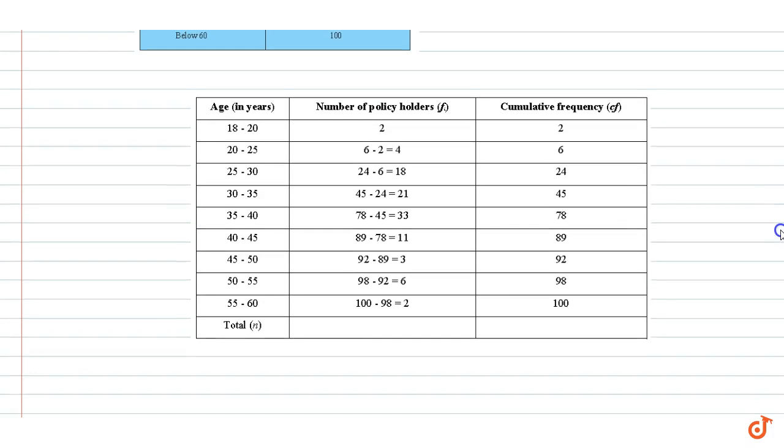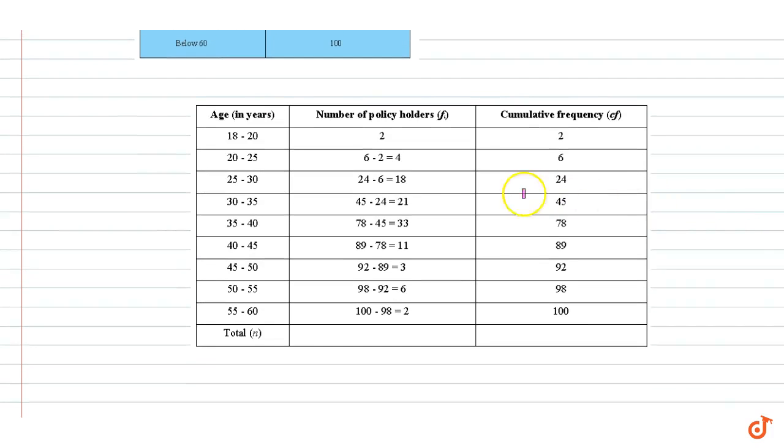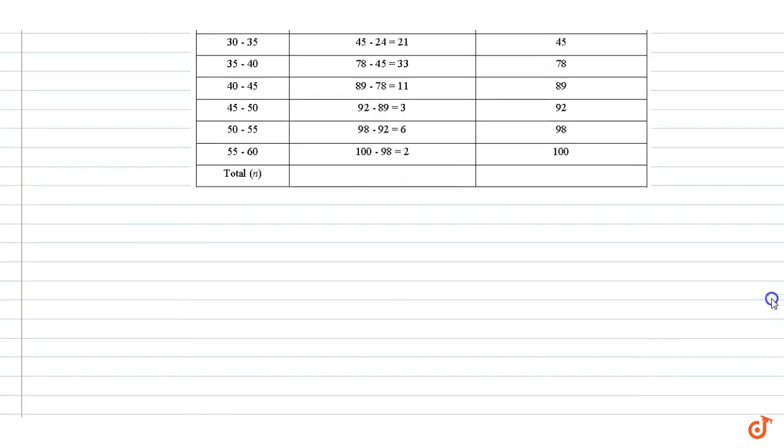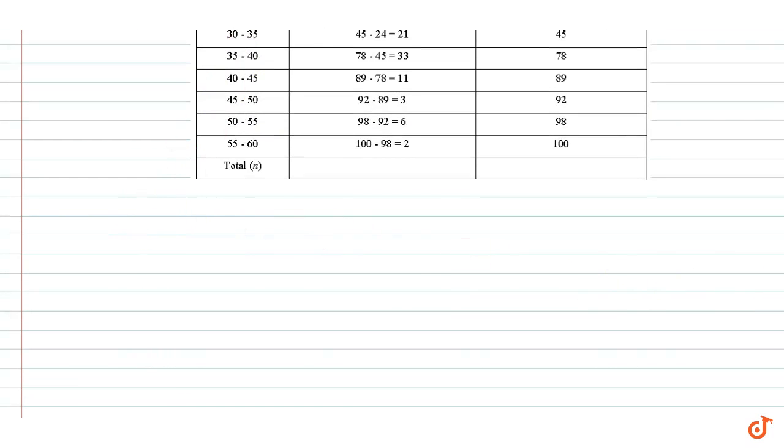We can construct a table that calculates the individual frequencies as shown. The first and third columns are replicated from the given table. The total number of observations n equals 100.